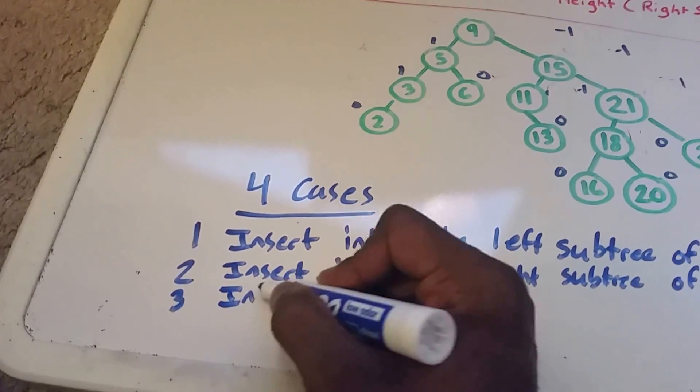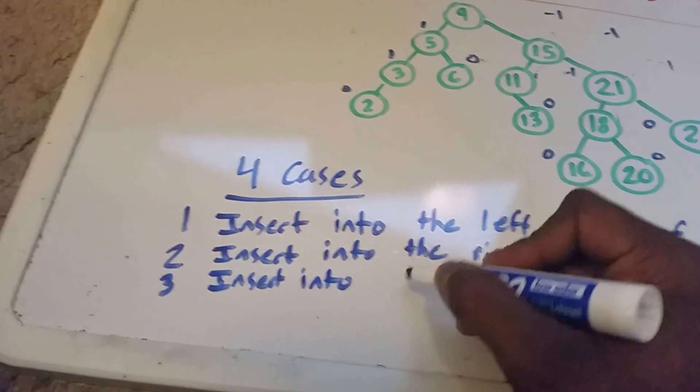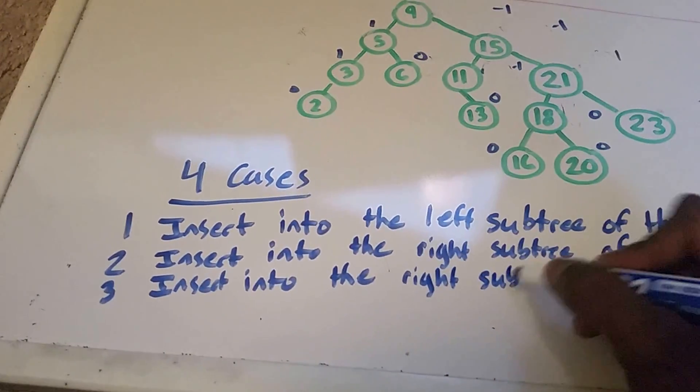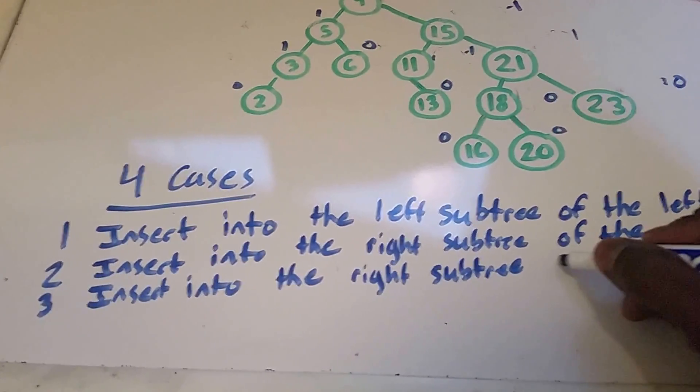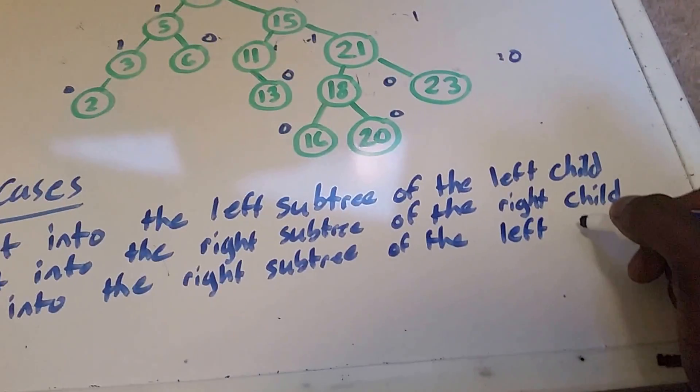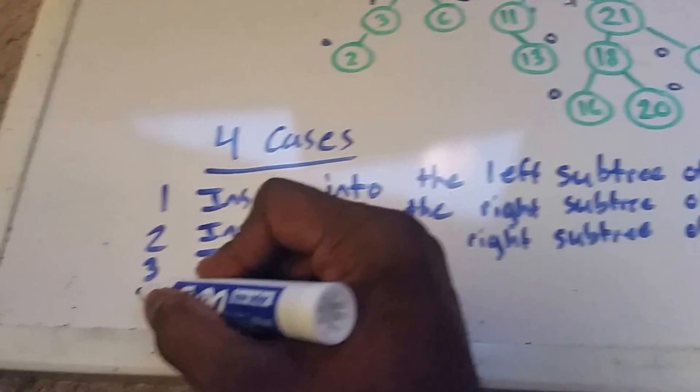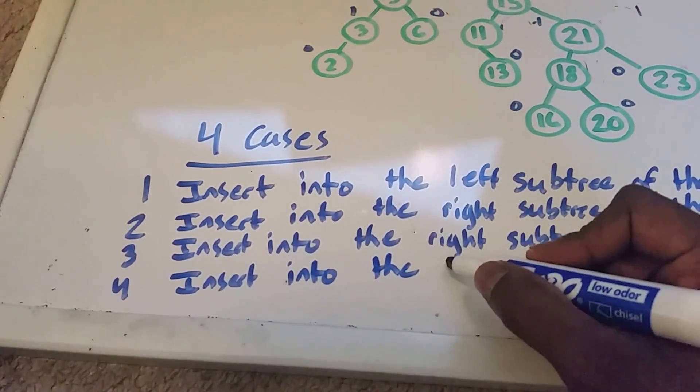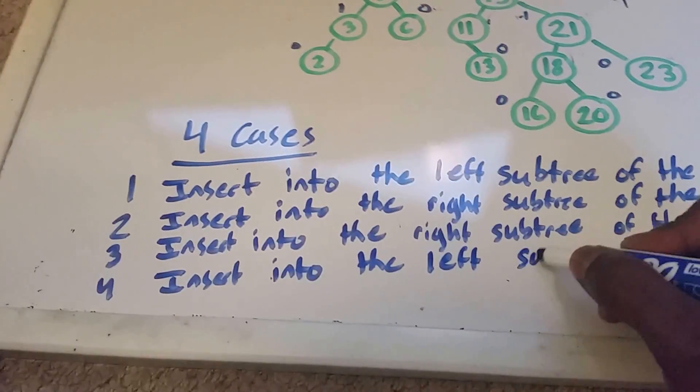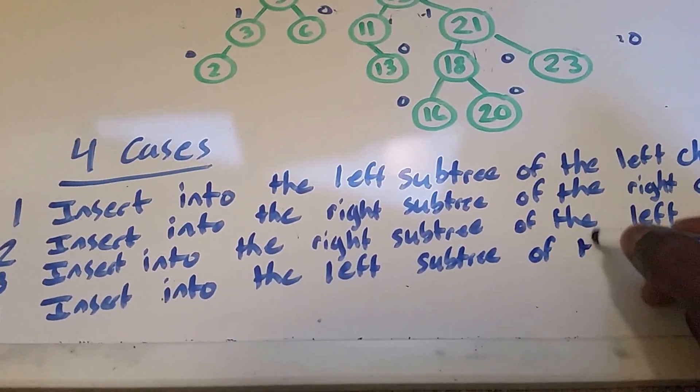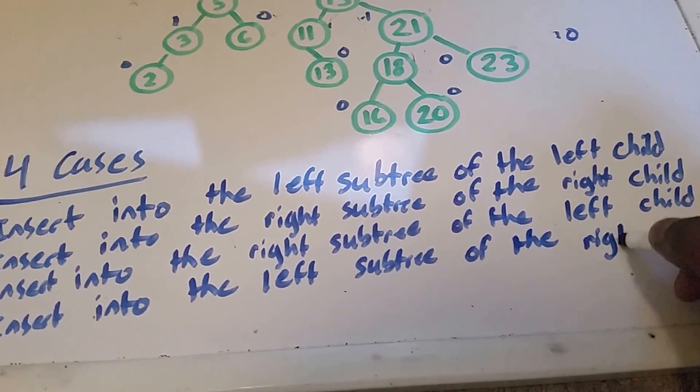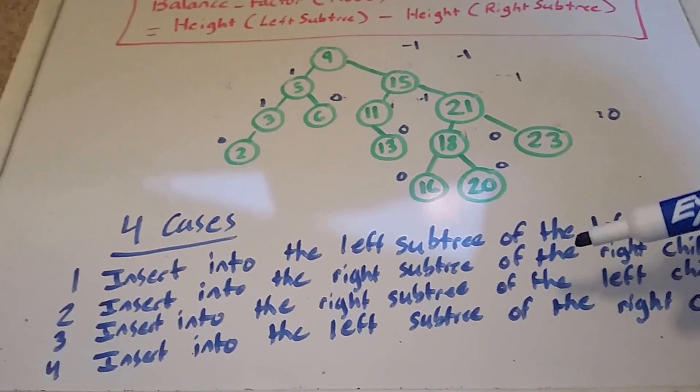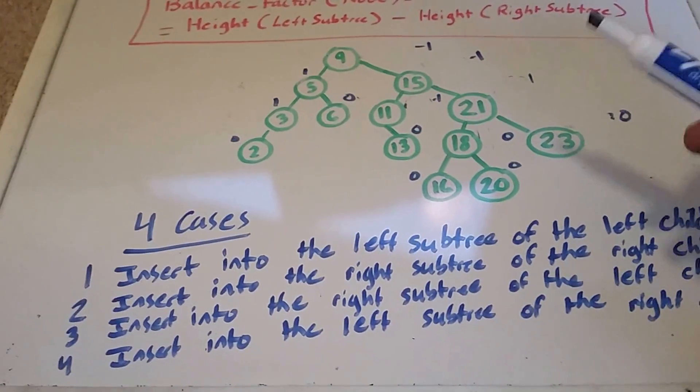Three, the right subtree of the left child. And then the fourth one should be vice versa. So if you insert into the left subtree of the right child. So those are the four cases that would cause you to rebalance an AVL tree.